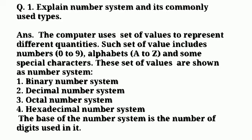Binary number system, decimal number system, octal number system, and hexadecimal number system. The base of the number system is the number of digits used in it. So we have four kinds of number system: binary, decimal, octal, and hexadecimal. Number system is a set of values which is used to represent a number in the computer.